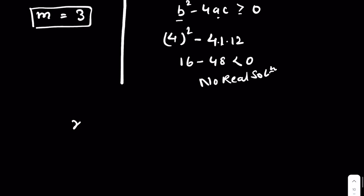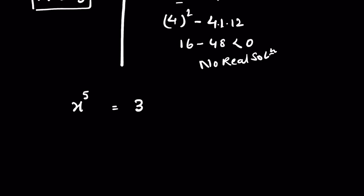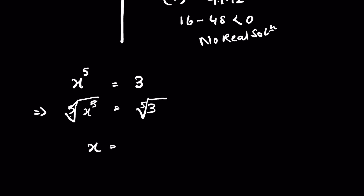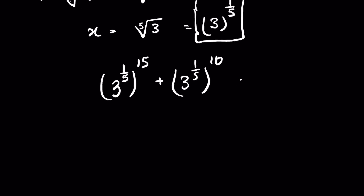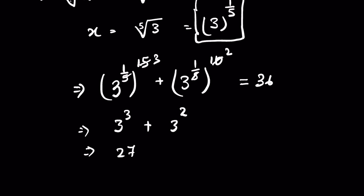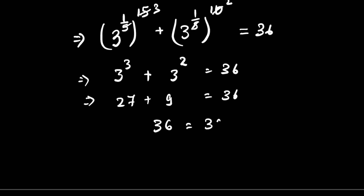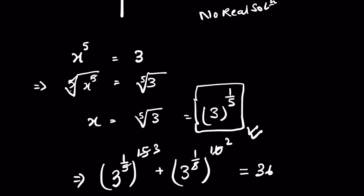Since m equals x raised to the power 5, we have x^5 equals 3. Taking the fifth root of both sides, x equals the fifth root of 3, or 3 raised to the power 1 upon 5. We verify: (3^(1/5))^15 + (3^(1/5))^10 equals 3^3 plus 3^2 equals 27 plus 9 equals 36. LHS equals RHS, so the answer is verified. The value of x is 3 raised to the power 1 upon 5.